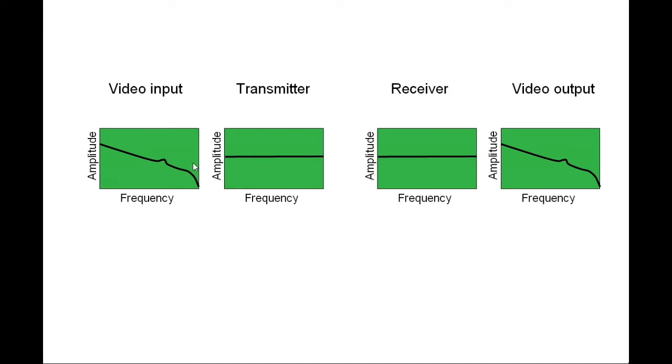So we have a video input, we have this signal. In a transmitter we have it completely flat, in the receiver we have it completely flat, and the video output is therefore likely the same as what we had as input. But you can forget that.